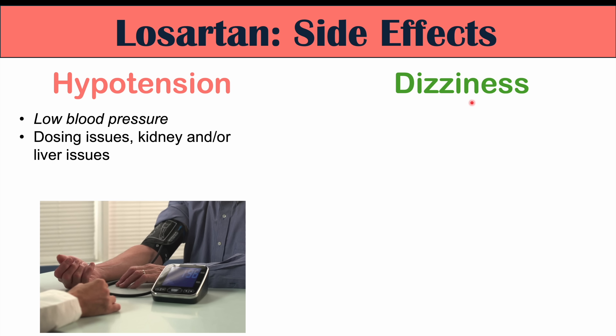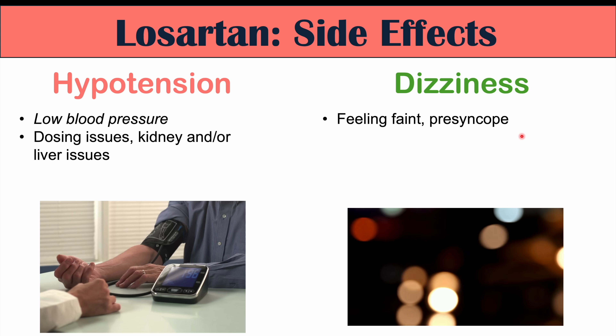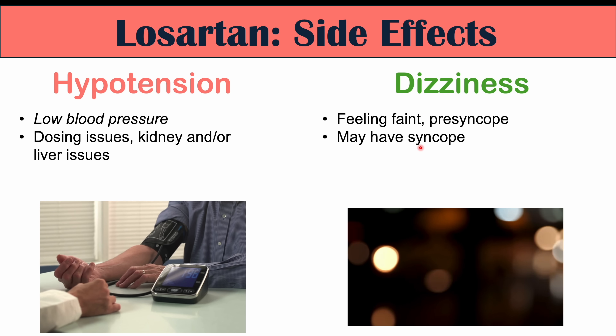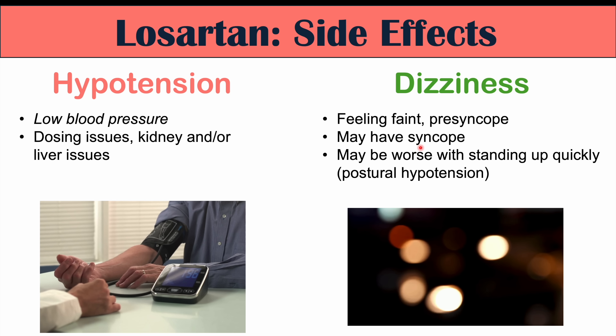We can also see dizziness in some patients — a feeling of faintness, which we call presyncope — and in some cases syncope, or fainting, if blood pressure goes too low. This may be worse with standing up quickly, known as postural hypotension. The dizziness can be related to hypotension due to a dosing issue, or it could be related to anemia or a low hemoglobin level, or patients generally feeling fatigued and weak.